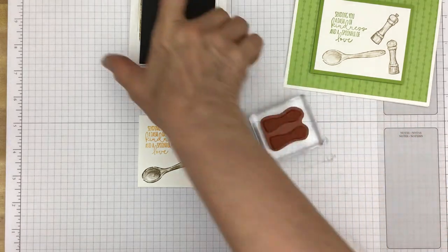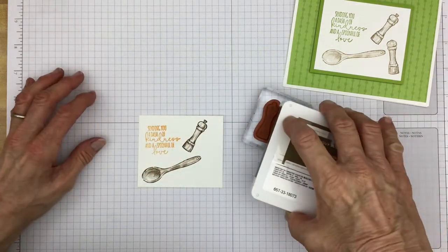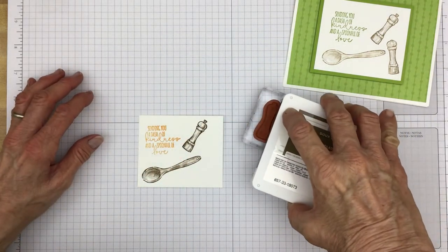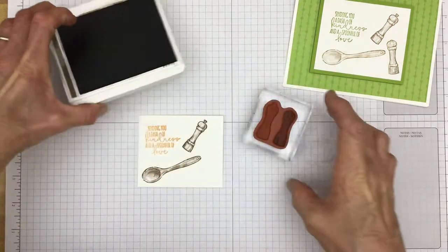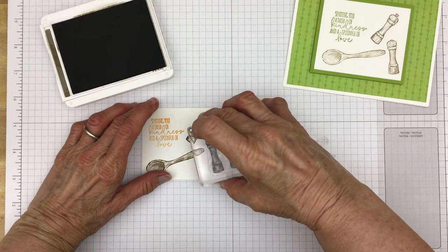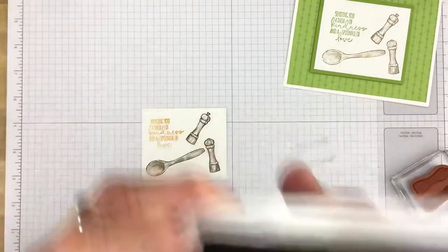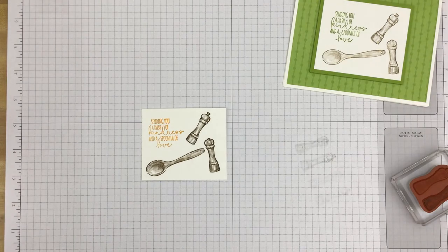Because now we're going to ink up the salt shaker. And we'll stamp it right here. There we go. And that's all the stamping for this card.